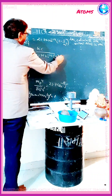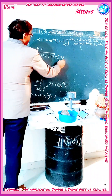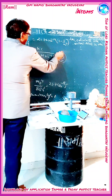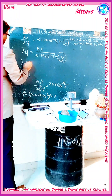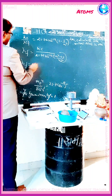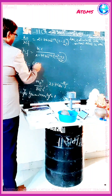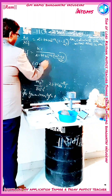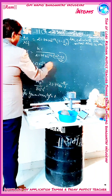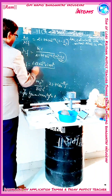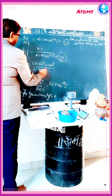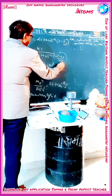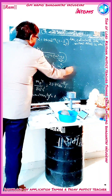Rearranging, λ_if comes into the numerator. So we get λ_if equal to h·c divided by 21.76 × 10⁻¹⁹, that is 6.6 × 10⁻³⁴ into 3 × 10⁸ divided by 21.76 × 10⁻¹⁹, into n_i² upon (n_i² minus 1).